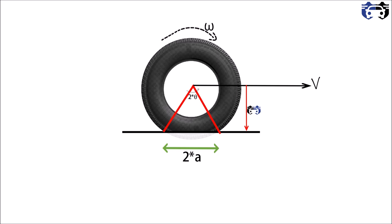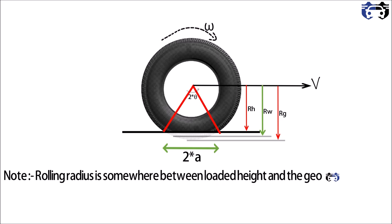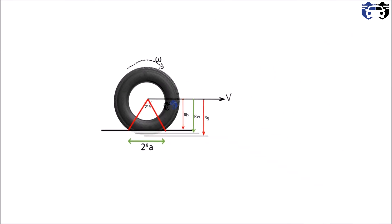The loaded height of the tire is given by Rh. The geometric height of the tire, which is the radius of the tire, is given by Rg, and the rolling radius is given by Rw. Note that the rolling radius is somewhere between the loaded height and the geometric radius. We are going to find the value of rolling radius.